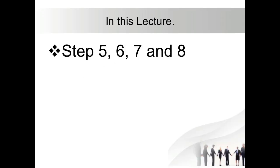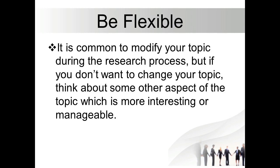Here we are with the last lesson dealing with choosing a research topic — steps 5, 6, 7, and 8. The fifth step of choosing a topic is to be flexible. It's common to modify your topic during the research process. You can never be sure of what you may find and where it may take you. You may find too much material and need to narrow your focus, or too little and need to broaden your focus. This is a normal part of the research process. When researching, you may decide that some other aspect of the topic is more interesting or more manageable.